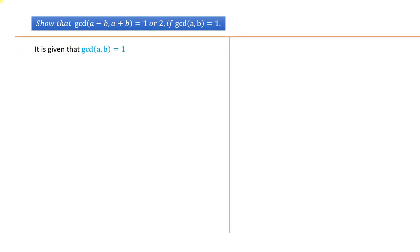It is given that GCD of a and b equals 1. We have to prove that GCD of (a - b) and (a + b) equals 1 or 2. Let us assume that GCD of (a - b) and (a + b) equals d.